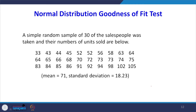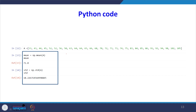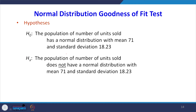A computer manufacturer wants to determine, at alpha = 5% significance level, if the annual sales volume (units sold by salespersons) follows a normal probability distribution. A simple random sample of 30 salespersons was taken with values like 33, 43, 44, and so on. For this dataset, the mean is 71 and standard deviation is 18.23. The null hypothesis is: the population of units sold has a normal distribution with mean 71 and standard deviation 18.23. The alternative hypothesis is that it does not.